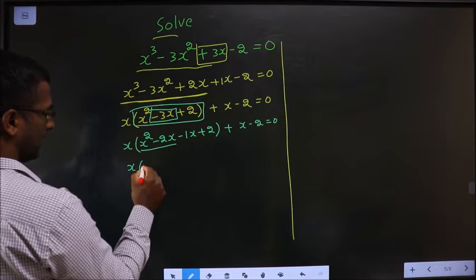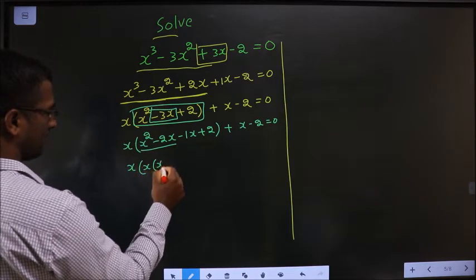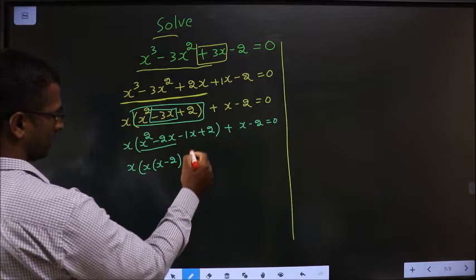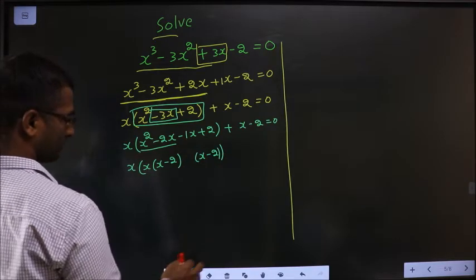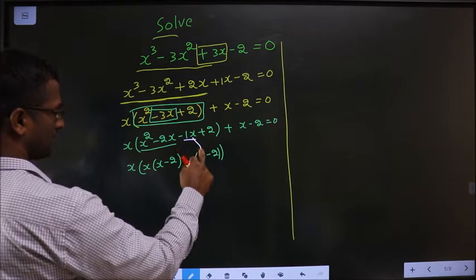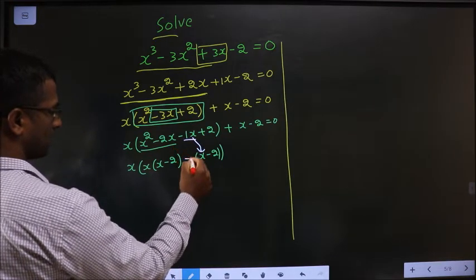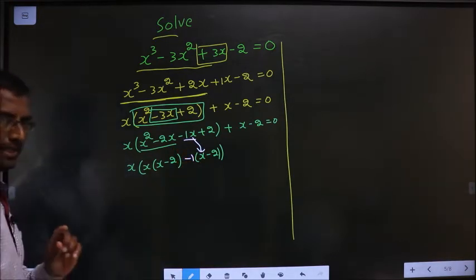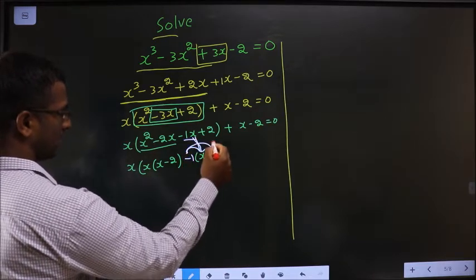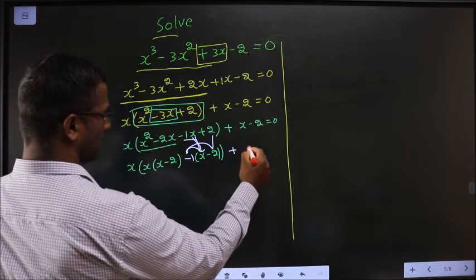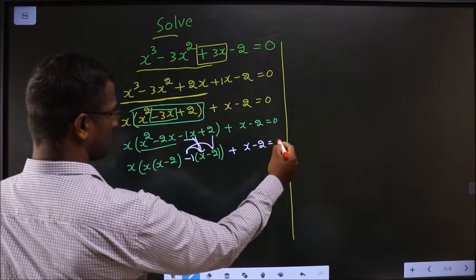From these two take x common. So what do I get? x minus 2. Here also I should get x minus 2. From this, x is gone inside means outside should be minus 1. In case of doubt, you can multiply and see. You will get the same result. Plus x minus 2 equal to 0.